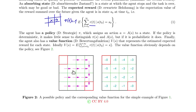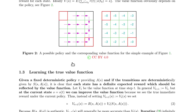Obviously this is not an optimal policy — it would be much better to move directly to the left if the agent starts in this state. These are the true values given this policy, but these values are not known to the agent, so the agent has to learn them.